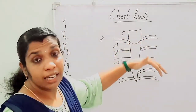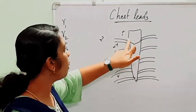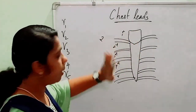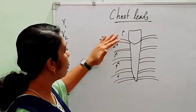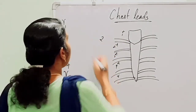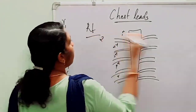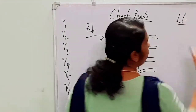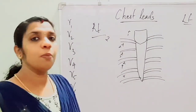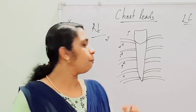Behind the clavicle there is the first rib. The space between the first and the second rib is the first intercostal space. Similarly, the second, third, fourth, and fifth intercostal spaces follow. This is the right side of the patient and this is the left side of the patient. Now let us see the position of chest leads in ECG.